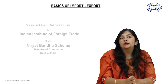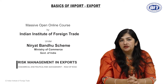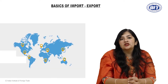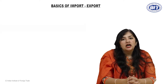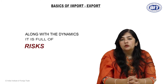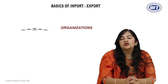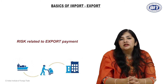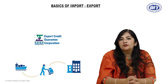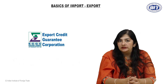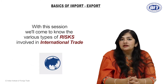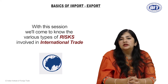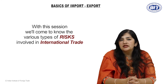Hello friends, today we are going to have a look at various risks involved in international trade and how it is covered in case of doing business in India. When we talk about international trade, it is a very dynamic environment, full of risks. We need some organization, some intermediary in order to cover those risks. In case of India, to cover risk related to export payment, we have the Export Credit Guarantee Corporation Limited. In today's session we will look at various types of risks involved in international trade, how they are covered, and how to make the best use of ECGC policies available to us.